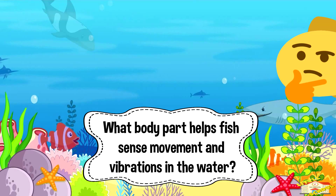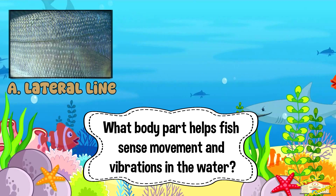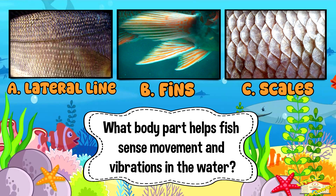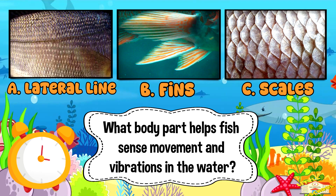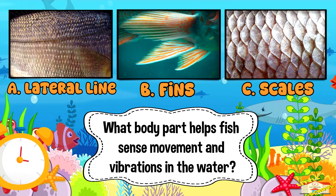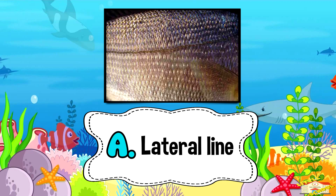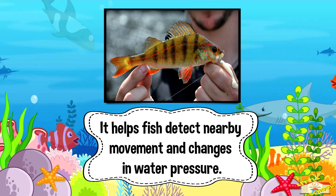What body part helps fish sense movement and vibrations in the water? A: lateral line, B: fins, or C: scales? Five, four, three, two, one. And the answer is A: lateral line. The lateral line is a special organ that runs along the side of a fish's body — it helps fish detect nearby movement and changes in water pressure.